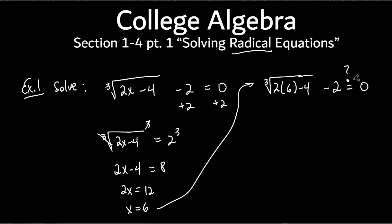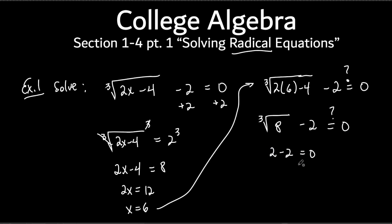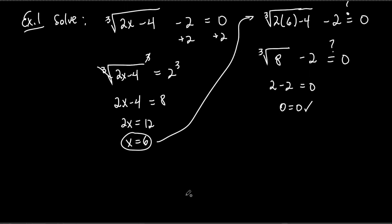I'll put a question mark because I want to see if the left side actually equals 0. The cube root of 2 times 6 minus 4: 2 times 6 is 12, 12 minus 4 is 8, then minus 2. The cube root of 8 is 2, and 2 minus 2 equals 0. So 0 equals 0 — it checks. Now we can go ahead and circle x equals 6. It's very important that you check these.